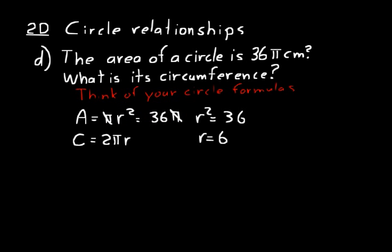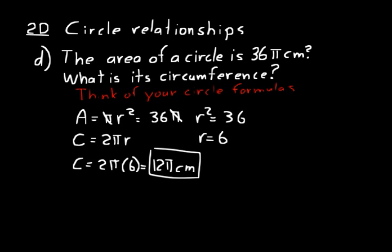Substitute the radius into the circumference formula: C equals 2 times pi times 6, which equals 12 pi. We can leave the answer in terms of pi like that — many textbooks stop there. Remember units: the area was in centimeters squared, so the circumference is in centimeters. When you see problems like this, think of your circle formulas, solve for the radius, then substitute it back. For example, if given circumference, find radius first, then use the area formula.